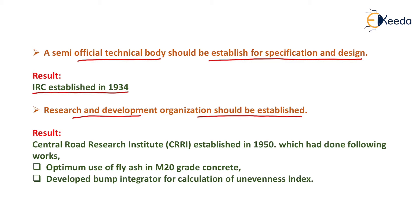According to the fourth recommendation of the Jaikar Committee, an organization for research and development of materials used in highway construction was needed. As a result, CRRI — Central Road Research Institute — was established in 1950. CRRI achieved optimum use of fly ash in M20 grade concrete and developed the bump integrator for calculation of the unevenness index.